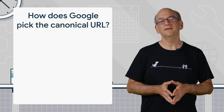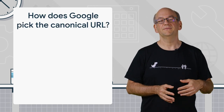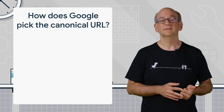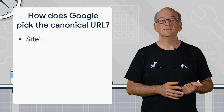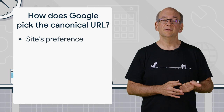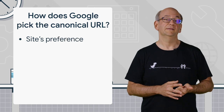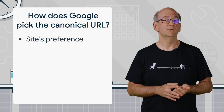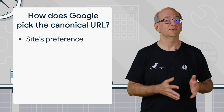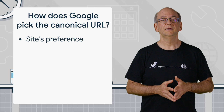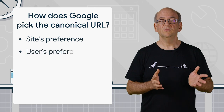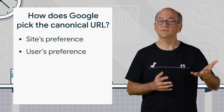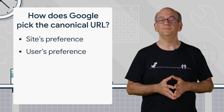We try to pick the canonical URL by following two general guidelines. First, which URL does it look like the site wants us to use — so what's the site's preference? And secondly, which URL would be more useful for the user?